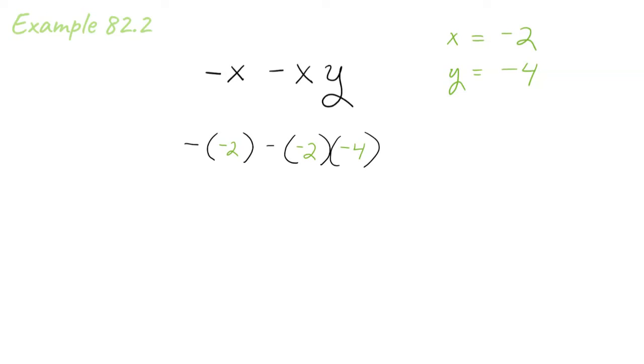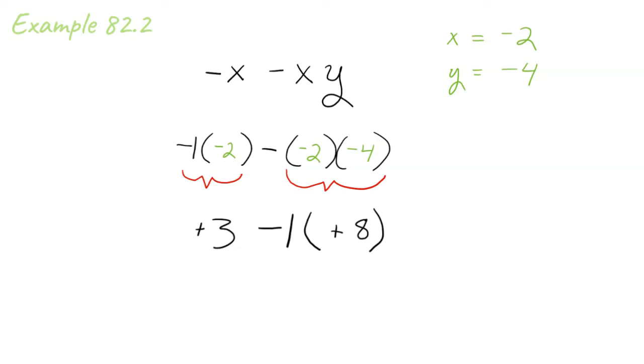After that, we multiply and remember when you have a negative in front of a variable, that's the same thing as negative 1 times that variable. So we drop in a negative 1 times the negative 2. That gives us a positive because we have a negative times a negative.